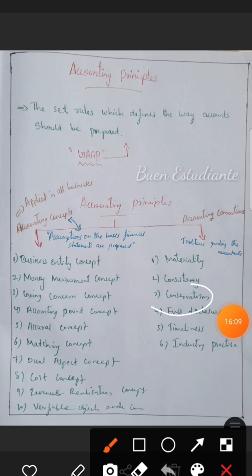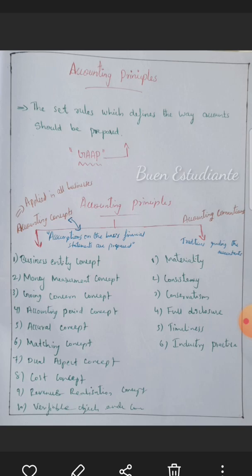The Conservatism or Prudence convention means playing it safe in accounting. Accountants should anticipate all possible losses but should not record profits until they are actually realized. Additionally, Full Disclosure requires that all relevant data and information should be disclosed in the financial accounts and statements.